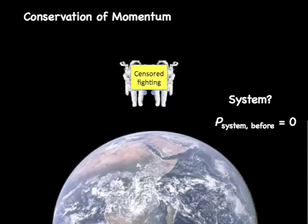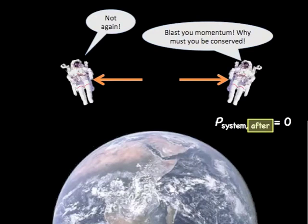If we make the assumption that these two astronauts are sitting stationary — which is not the best assumption given that we know something about orbiting objects — we can say that the momentum of the system is equal to zero before any pushing event. After the pushing event, because of conservation of momentum, it must still be true that the system's momentum is equal to zero. Notice that I have to include both of the astronauts for that to be true. Given that momentum is a vector, one vector pointing to the left will cancel the other vector pointing to the right.